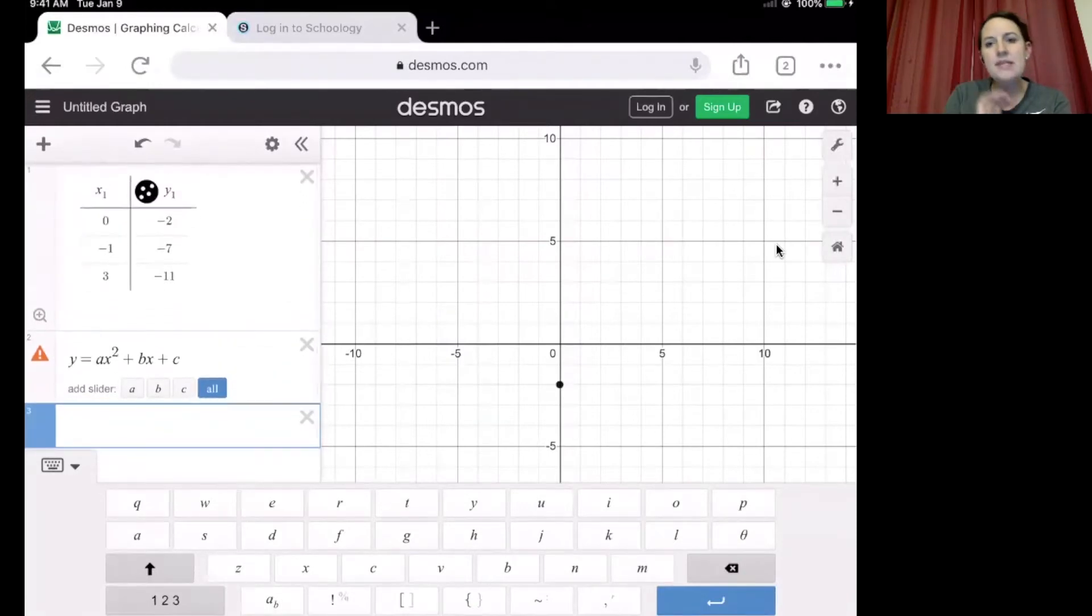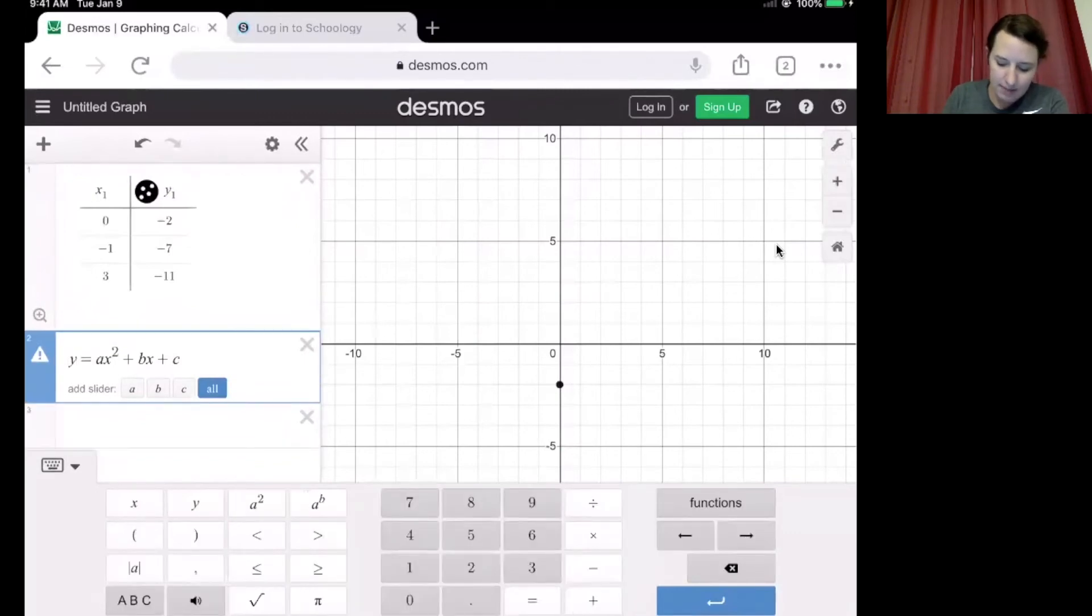First error that we have, if we look up at our table, we see that it's not just labeled x and y, it's labeled x1 and y1. So we're going to need to go back anywhere in our standard form where we see an x or a y. We're going to click after that variable and we're going to type a number one. And you see how the computer automatically makes that a subscript. It puts it down below the letter. So ax1, x1, and then we have bx1.